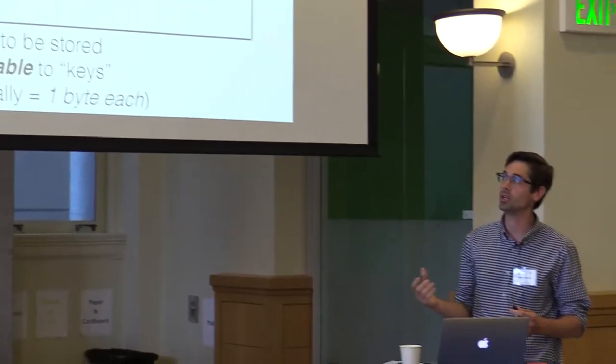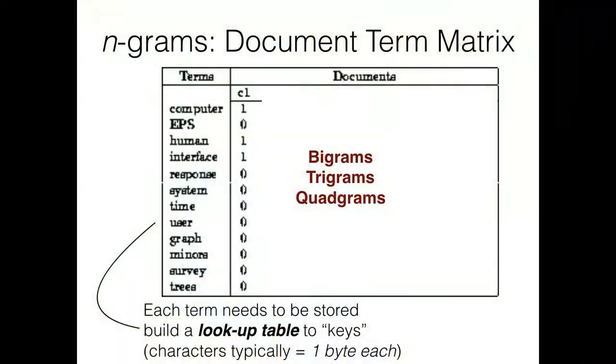Instead of looking at just unigrams — individual terms — you might want to look at bigrams like 'the pizza' or 'tasty beer,' or trigrams like 'the pizza is' or 'the pizza is delicious.' As you scale out, the number of unique entries you need — the number of unique trigrams or bigrams — grows exponentially. This also becomes a significant problem.